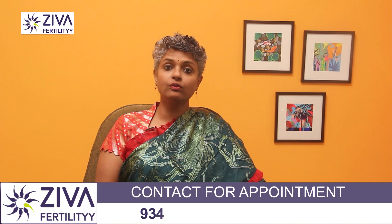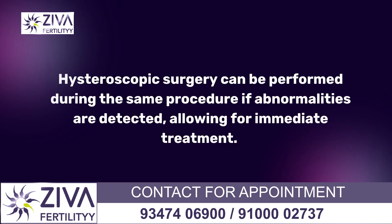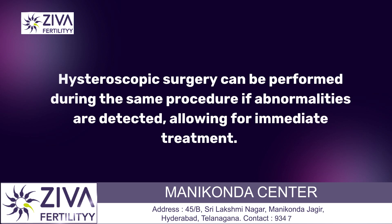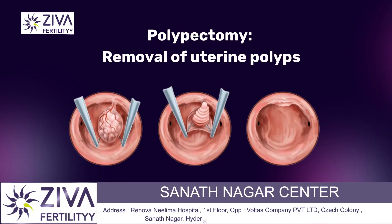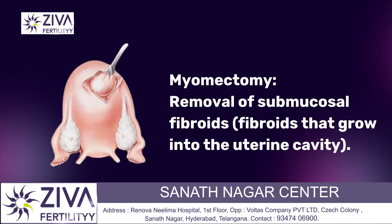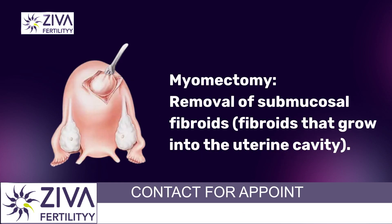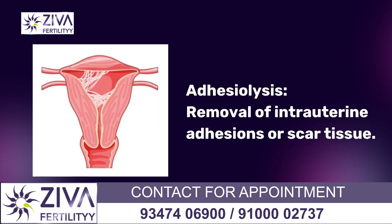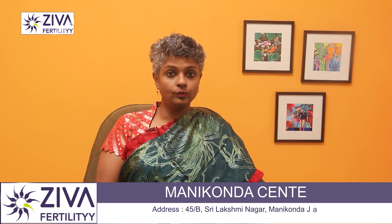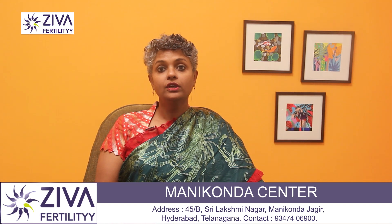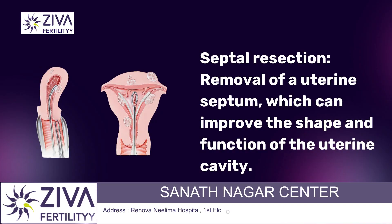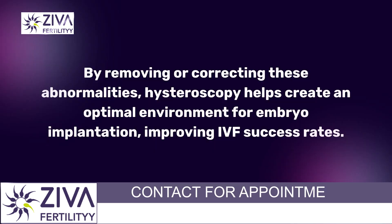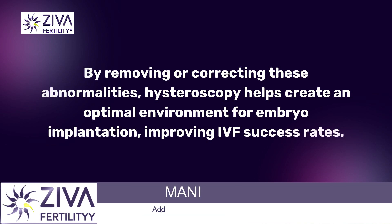Hysteroscopy can also be used for treatment of uterine abnormalities. Operative hysteroscopy surgery can be performed during the same procedure if abnormalities are detected, allowing for immediate treatment. These can include polypectomy, which is the removal of uterine polyps; myomectomy, which is the removal of submucosal fibroids that grow into the uterine cavity; adhesiolysis, the removal of intrauterine adhesions or scar tissue; or septal resection, the removal of a uterine septum, which can improve the shape and function of the uterine cavity. By removing or correcting these abnormalities, hysteroscopy helps create an optimal environment for embryo implantation, improving IVF success rates.